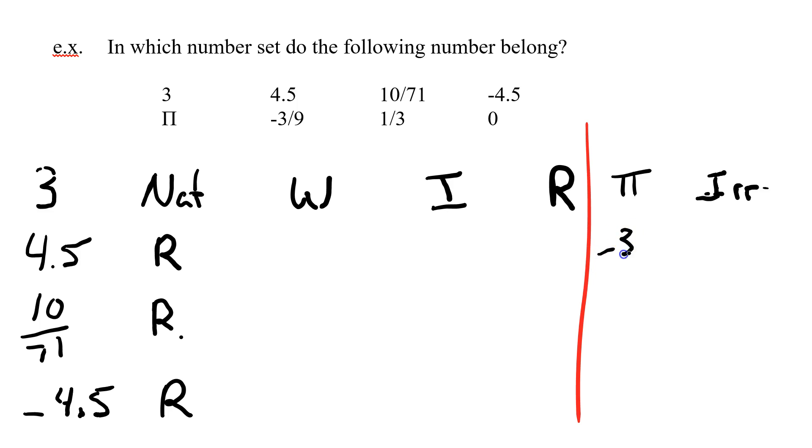Negative 3 over 9. Well, it's negative, so it's not natural or whole. But it could be an integer. Sorry, it can't be an integer, so it has to be a rational number. Can't be an integer because it can't be a fraction.